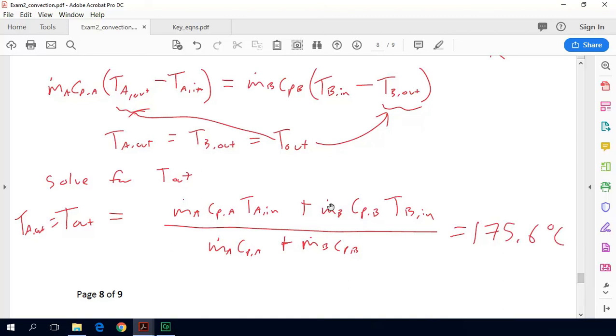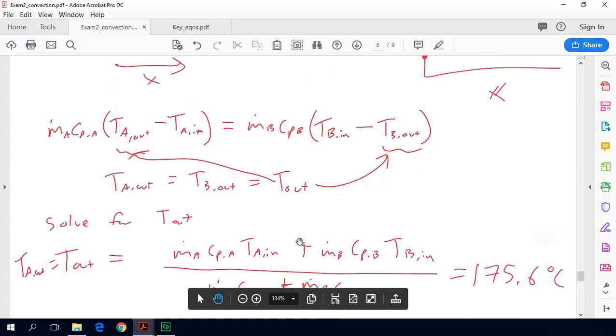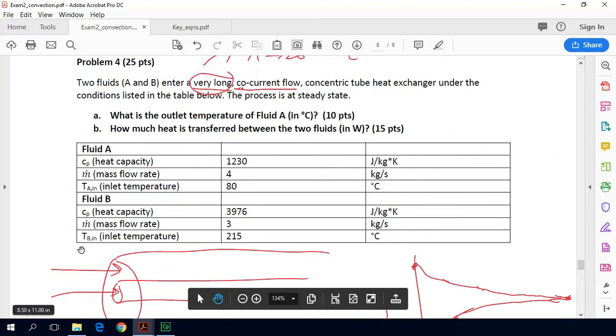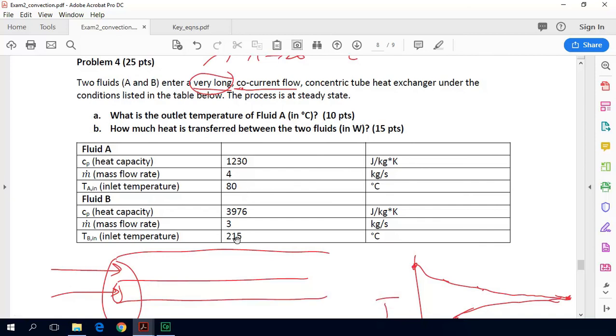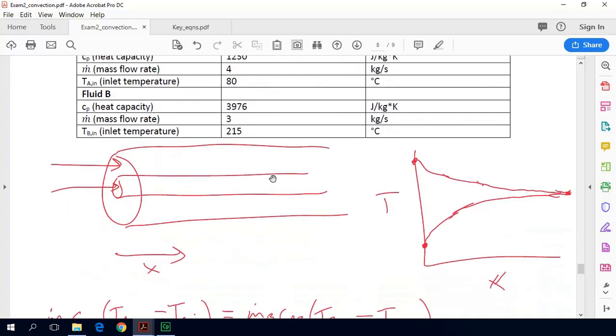And again, as always, I usually skip the plugging and chugging, but that part is important to make sure we have all the units right and that we get a number that makes sense. So does this 175.6 make sense? So fluid B comes in at 215, fluid A comes in at 80, and they meet somewhere in the middle. That somewhere in the middle is a little bit closer to the fluid B temperature because it has the higher heat capacity rate, which is M dot B times CP B. That number ends up being substantially higher than fluid A. So the way this graph would really look would be something more like this. Or that final temperature is closer to the fluid B temperature because it has the greater capacity to give off heat.